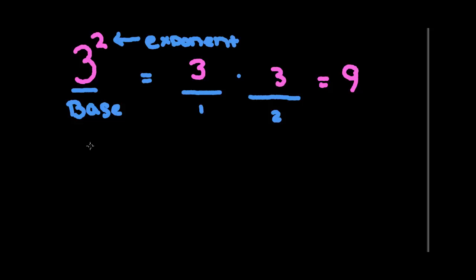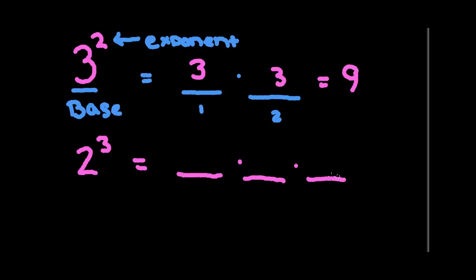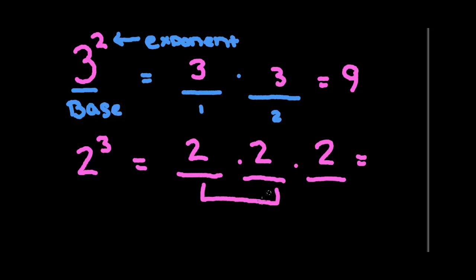If we had a number raised to the third power, that would mean we need to multiply something times itself 3 times. The base here is 2, and 2 gets multiplied times itself 3 times. 2 times 2 is 4, then 4 times 2 gives us 8.